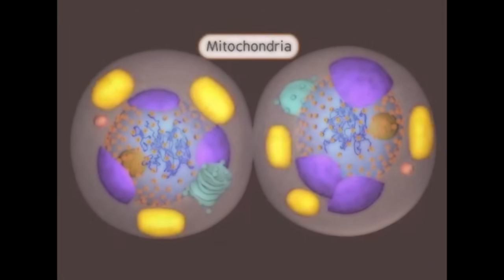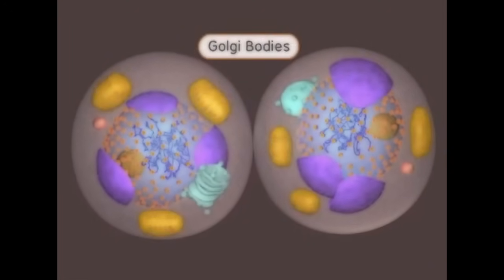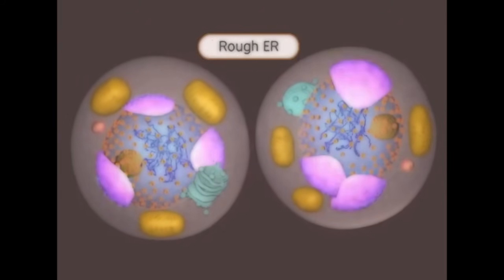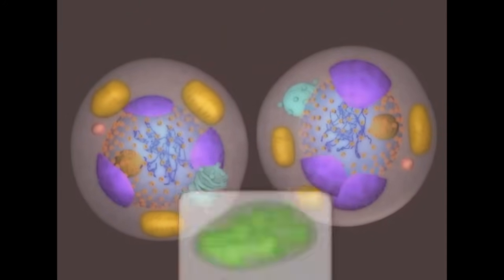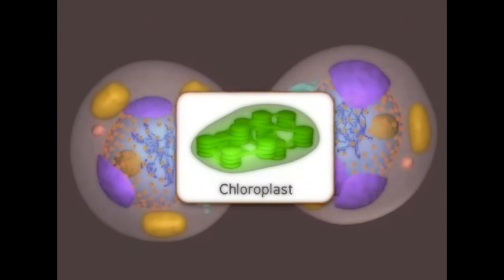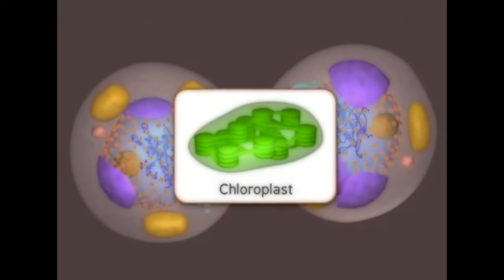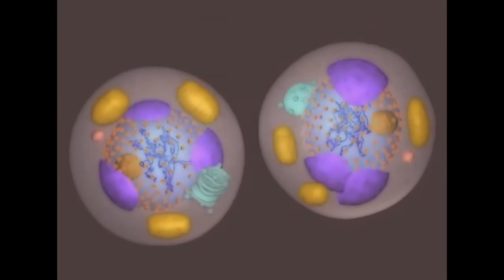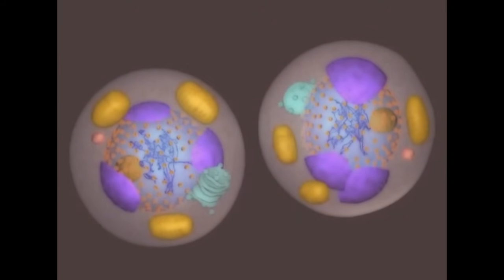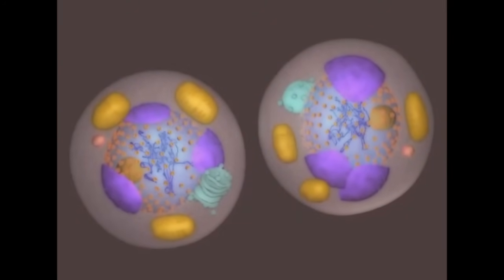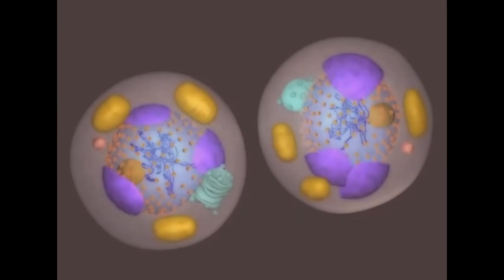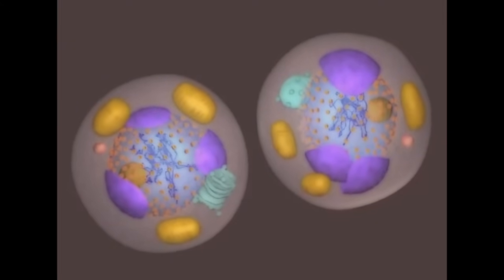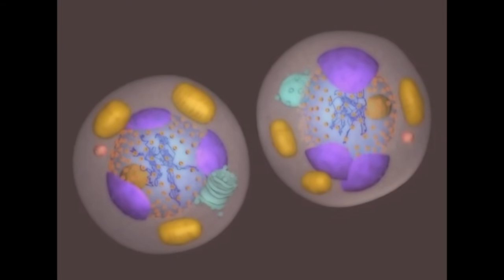This includes mitochondria, Golgi bodies, and the rough ER. Plant cells also have chloroplasts. Once split, the two new cells are now fully in the G1 stage of interphase and ready again to begin their growth.